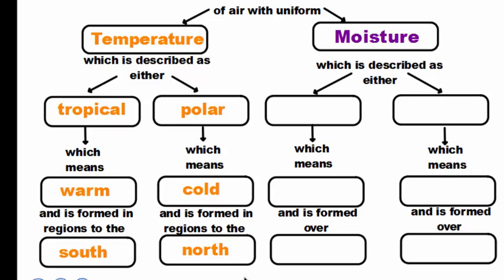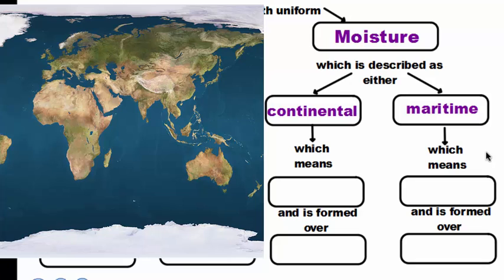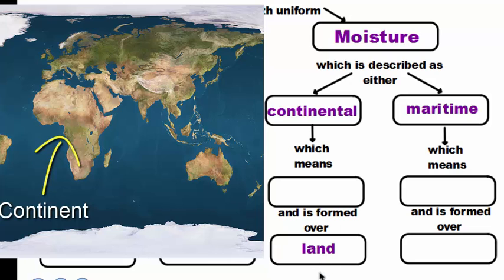That takes care of temperature and how temperature is described in an air mass. For moisture, they use two familiar words: it can be described as continental or it can be described as maritime. If you think about the word continental, the easy thing to think about is what a continent means — continents are large masses of land. So usually continental air masses form over land, and since land is typically dry, the air is going to have low humidity and it's going to be dry air.